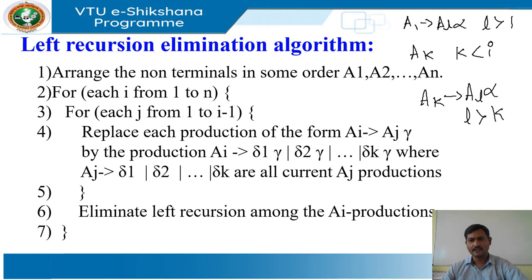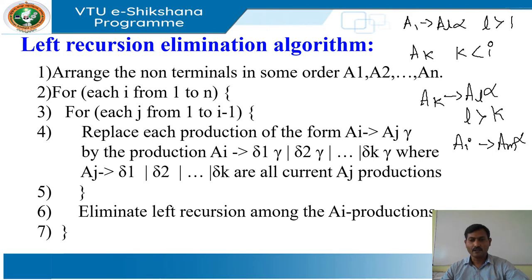As a result, on the i-th iteration, the inner loop of lines 3 to 5 progressively raises the lower limit in any production Ai derives Am alpha until m is greater than or equal to i. Then eliminating immediate left recursion for the Ai productions at line 6 forces m to be greater than i.